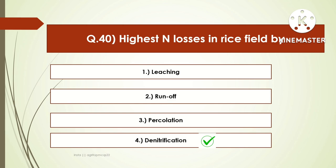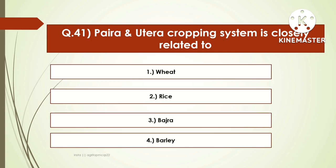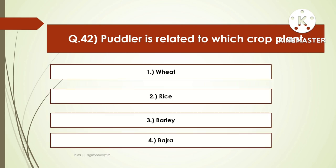The next question is: pera and utera cropping system is commonly related to which crop? Options are wheat, rice, bajra, or barley. The right answer is rice. Pera cropping system is adopted in Bihar and utera cropping system is adopted in Madhya Pradesh. The next question: puddler is related to which crop? Options are wheat, rice, barley, or bajra. The right answer is rice. Puddling is related to rice. The depth of puddling in rice is 5 cm. The objective of puddling in rice is to minimize leaching loss of nutrients.